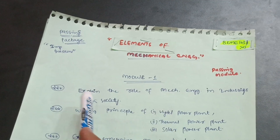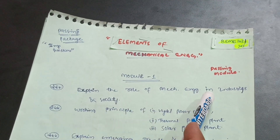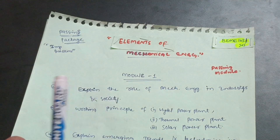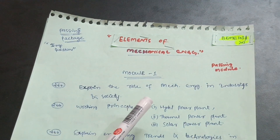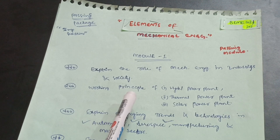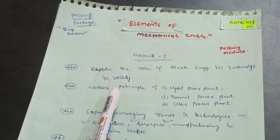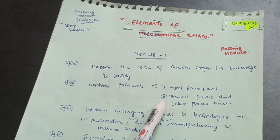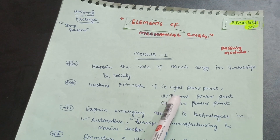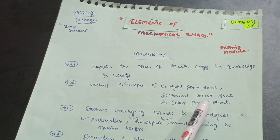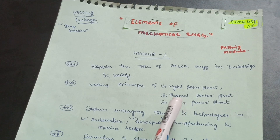One of the most important questions for Module 1 is: explain the role of mechanical engineering in industries and society. Next, you need to cover working principles — the working principle of a hydel or hydro power plant, thermal power plant, and solar power plant. Among these three, definitely two will be asked in the exam.